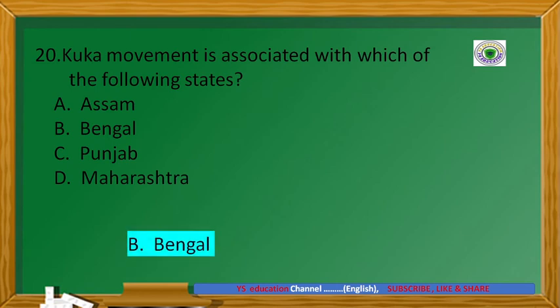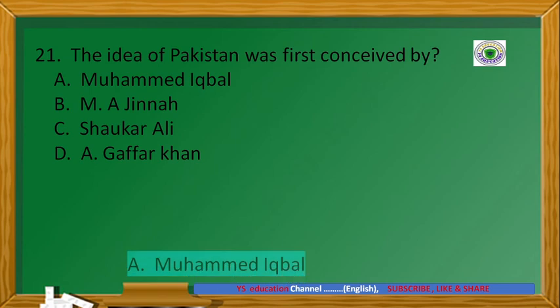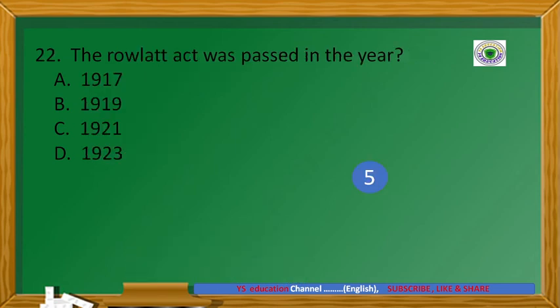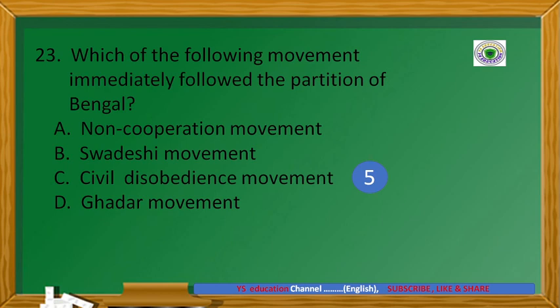The idea of Pakistan was first conceived by? Answer: Mohamed Iqbal. The Rowlatt Act was enacted in the year? Answer: 1919. Which of the following movements immediately followed the partition of Bengal?